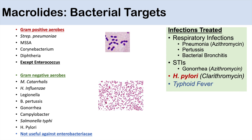The infections that macrolides can treat include respiratory infections. They're good for treating community-acquired pneumonia — azithromycin is commonly used, generally alongside a third-generation cephalosporin like ceftriaxone. They're also good for treating pertussis and bacterial bronchitis, as well as STIs like gonorrhea — azithromycin is the treatment used for gonorrhea. They're also part of the triple therapy for Helicobacter pylori infections, with clarithromycin used specifically for H. pylori. And they treat typhoid fever due to activity against Salmonella typhi.